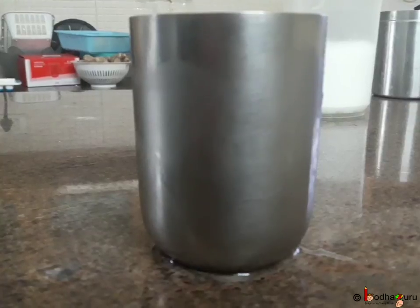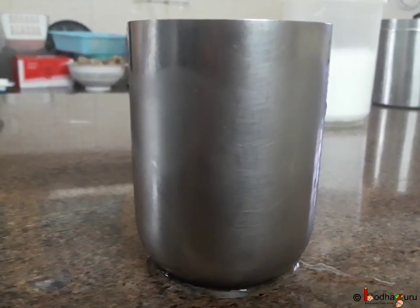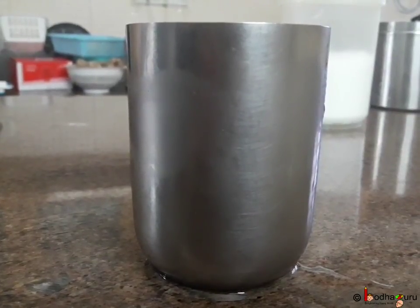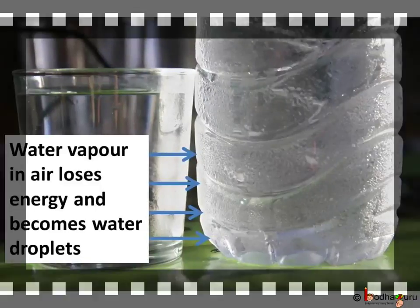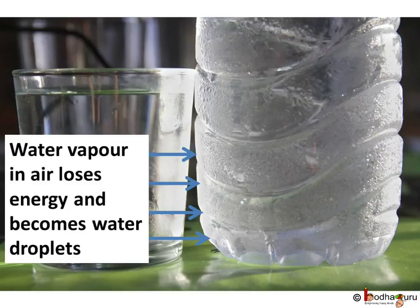Initially, the glass becomes cold because the glass is losing heat to achieve thermal equilibrium with the cold water. The air has water vapour. These molecules are moving with the air and have kinetic energy. When they come in contact with the cold glass, they lose some of their kinetic energy. This loss of kinetic energy is actually responsible for condensation, i.e. water vapour turning into water droplets.